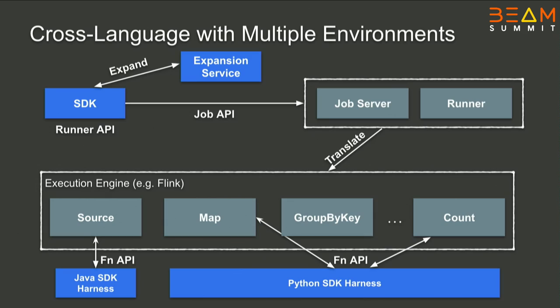What are cross-language pipelines? It's the consequence of having a proper language portability model in which the SDK produces a standardized Runner API format and can resolve external transforms. For instance, if I wanted to use a Kafka connector in Python — Python doesn't really have one yet, and tooling support for Kafka in Python is not that great — we can just say: let's use the Java Kafka connector. We have an expansion server which calls into Java and resolves the Kafka connector transform and places it into the pipeline. When we bring up our pipeline, we see that this transform requires the Java runtime environment, the Java SDK harness, to run the Kafka connector. For all other code, we can still use Python or any other language.